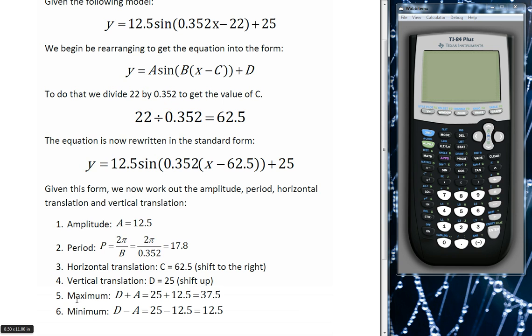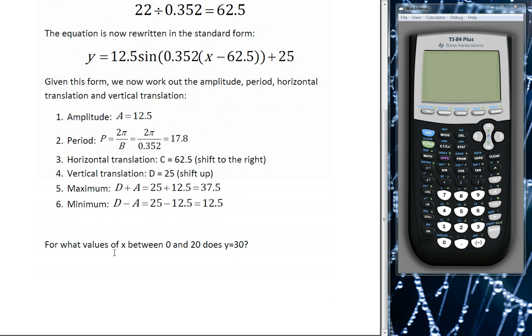Last couple of calculations then. Our maximum value, we can calculate by adding d, so the principal axis, adding the amplitude to that. So we get 25 plus 12.5 gives us 37.5. Our minimum value is the principal axis subtract the amplitude, which 25 take 12.5 gives us 12.5. So now we've got our major or main values of interest. So what we want to do now is graph this and then solve typical standard sort of problem, is working out what values of x, or for what values of x does our graph cross the line y equals 30. Right, so let's fire up the calculator.